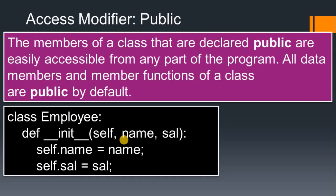Just like in C++ and Java we use the keywords public, private, and protected, but in Python we don't use such keywords because Python prefers easy syntax and makes writing code very easy. Instead, in Python we use the underscore concept for representing private and protected. If you see self.name and self.sal without any underscore, it means they are public — accessible anywhere in the program.